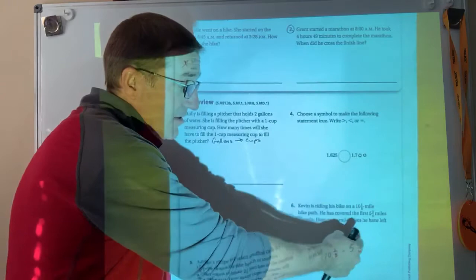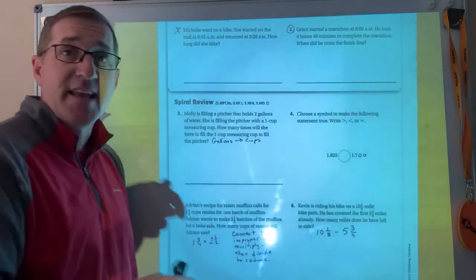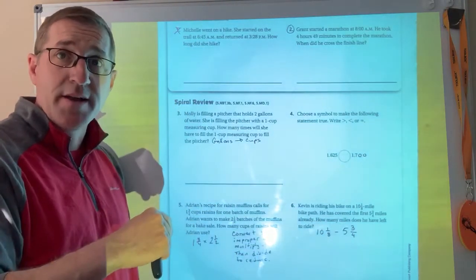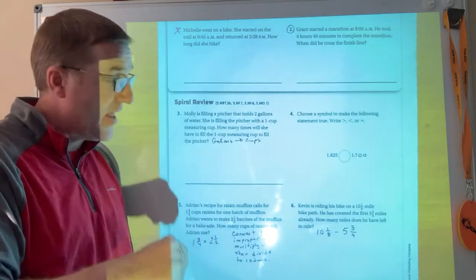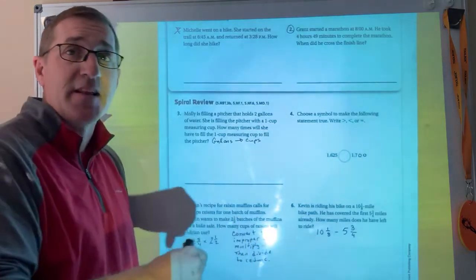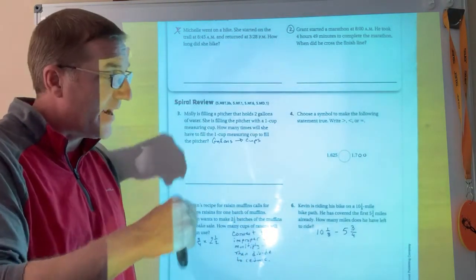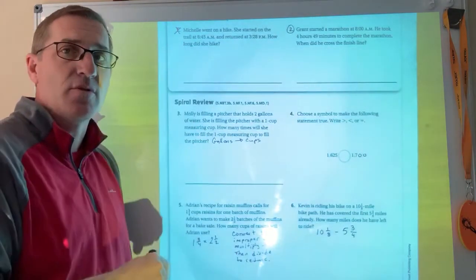You can't subtract 6⁄8 from 1⁄8. You have to take 10, subtract 1 to get it to be a 9, and then add 8⁄8 to the 1⁄8. It's going to be 9 and 9⁄8 minus 5 and 6⁄8 if you do it right.